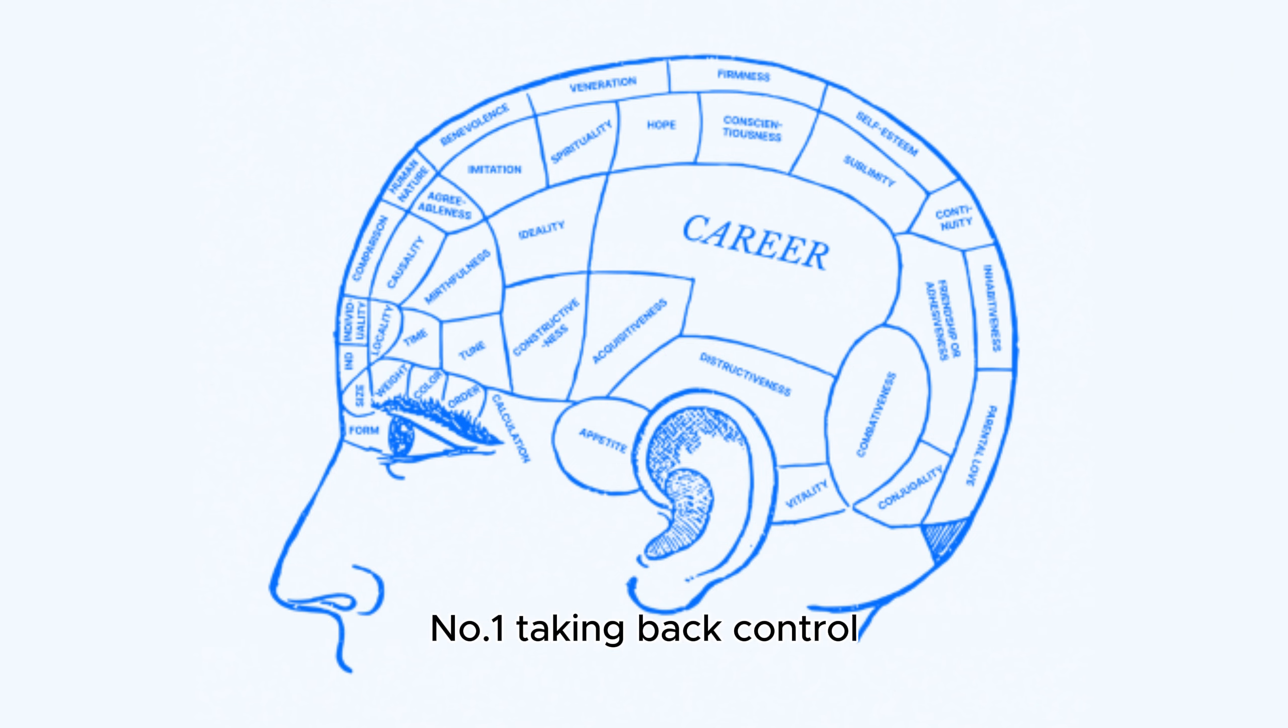Number one: Taking back control. Do you have a say over your work? Can you decide how to achieve your goals and deadlines? Do you have the skills, resources, and support you need to do your job well? If you answered no to any of these questions, you might be missing out on control, one of the benefits of psychological ownership.